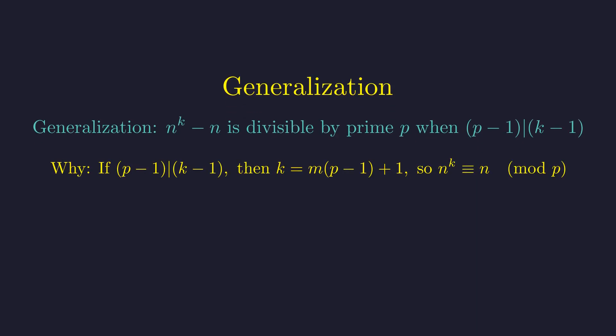Here's the idea. If (p - 1) divides (k - 1), then k has the form m(p - 1) + 1. Fermat's theorem then guarantees that n^k is congruent to n modulo p.